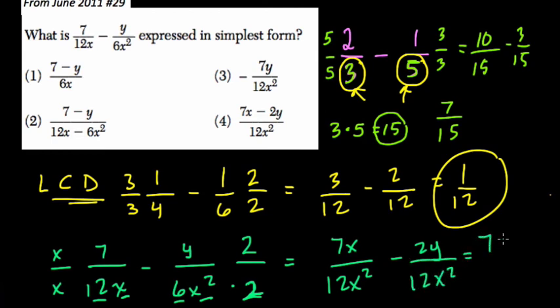And then we have our answer, 7x minus 2y over 12x squared. And we're done. We have choice 4 there.